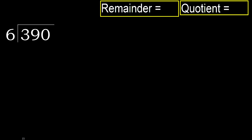390 divided by 6. 3 is less, therefore next. 39 is not less, therefore work with 39. 6 multiplied by which number is nearest to 39, but not greater?